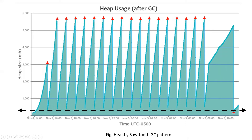When it hits the ceiling point, once again the full GC runs and the memory drops all the way to the bottom where it almost started. Similarly, traffic comes, the full GC gets triggered, and the memory drops all the way to the bottom. This is a beautiful sawtooth pattern happening in a very periodic interval — roughly every one hour. When you see this kind of pattern, your application is in a very healthy condition.